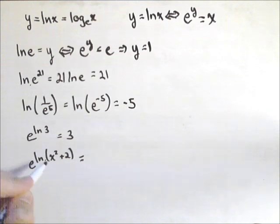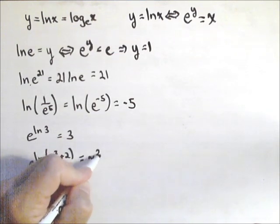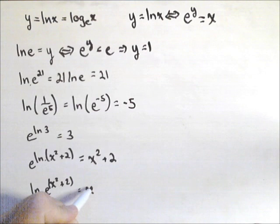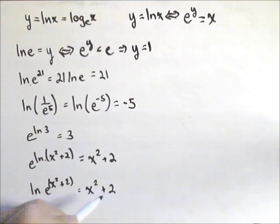So these properties hold for all logs as long as these bases are the same, not just natural log. This just happens to be because I'm using a base e on both. So these are some of the properties that we need to know working with logs. If we had ln of e to the x squared plus 2, so that's all in the exponent, that's also equal to x squared plus 2.